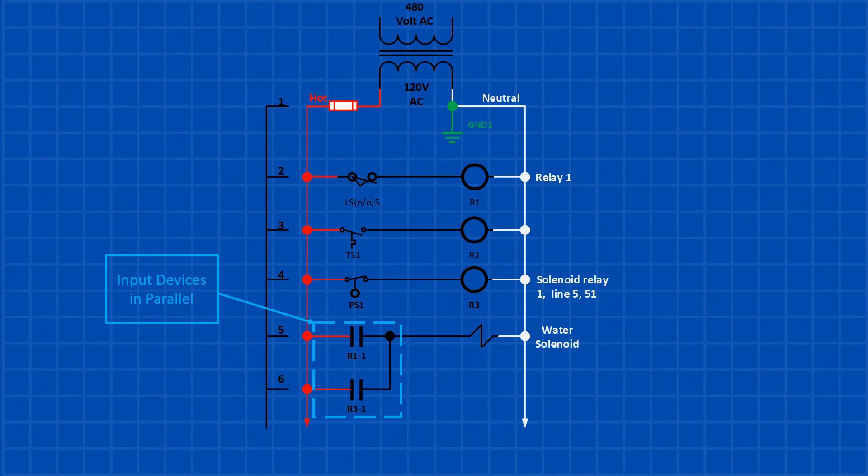Sometimes design requires several parallel inputs. This is when two or more inputs will energize the same output. For example, on line 5 and 6, contacts R11 and R31 are connected in parallel.